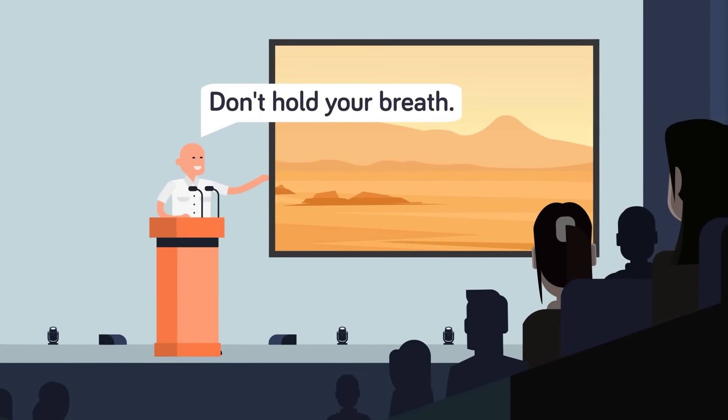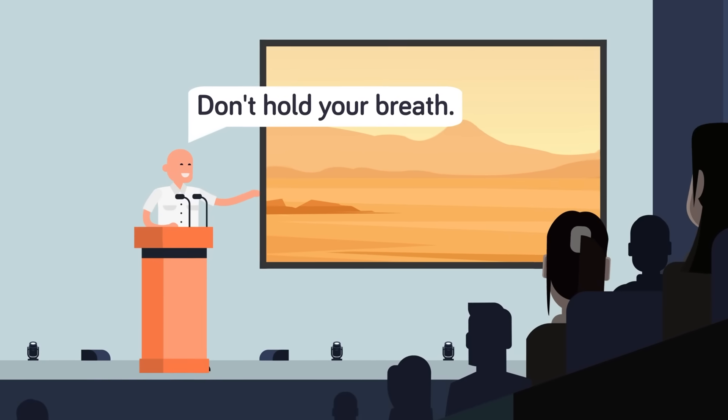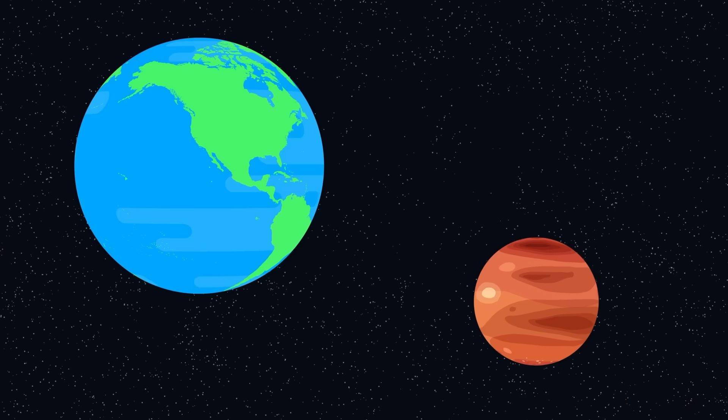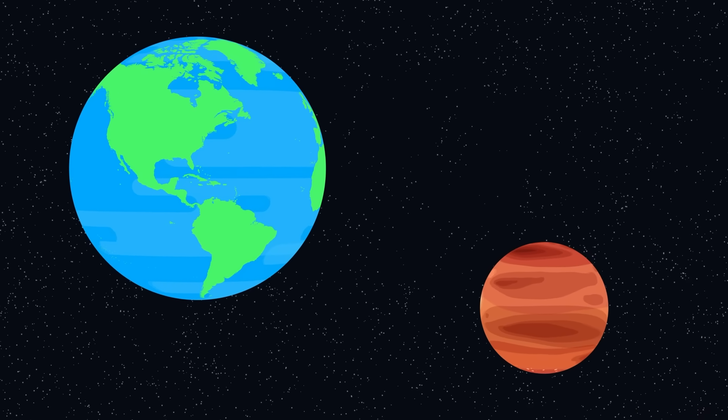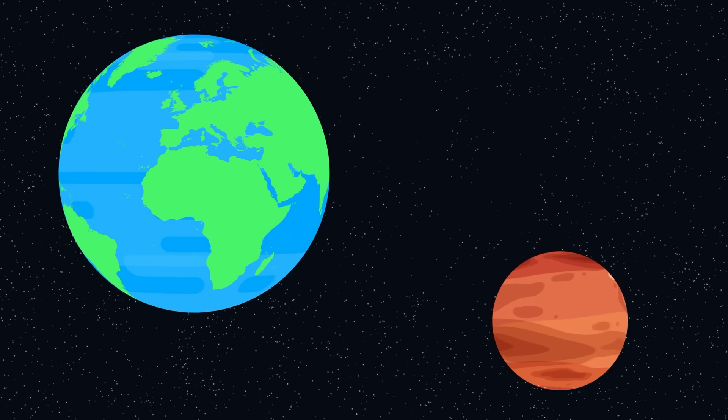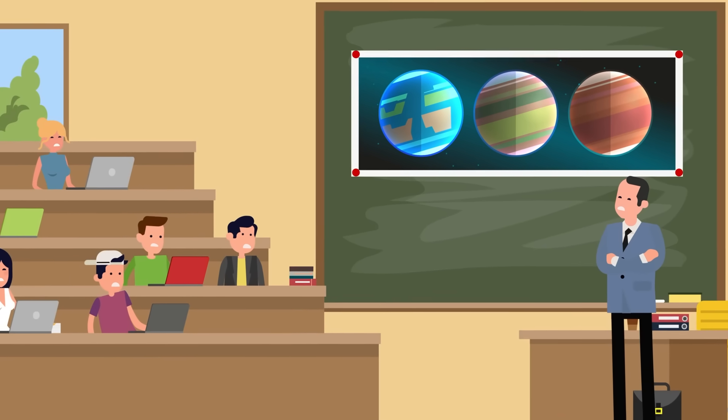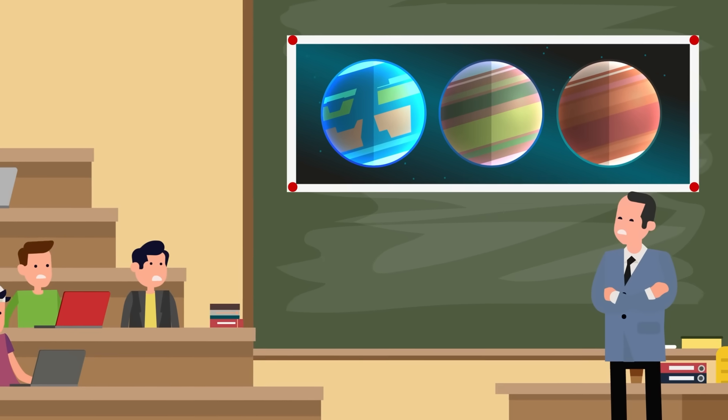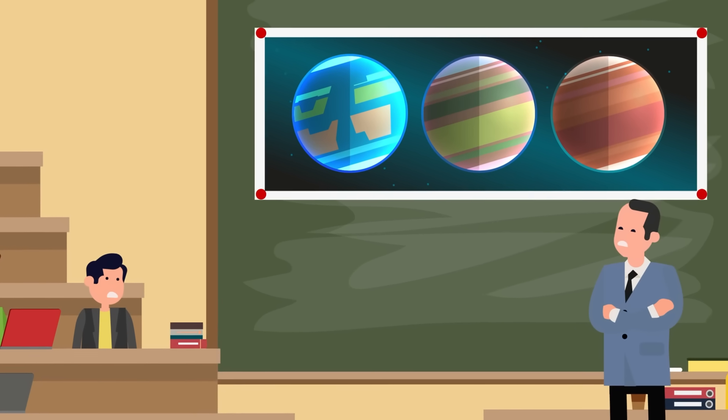Mars was once a planet with a thick atmosphere, rich in carbon and plentiful lakes and oceans of liquid water. But Mars is smaller than Earth, and its molten core cooled far faster than ours. As its core hardened and its magnetic field disappeared, the Martian atmosphere was exposed to harsh solar winds that gradually stripped it away. The air pressure on the planet dropped, and the oceans dried up.